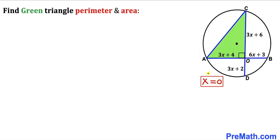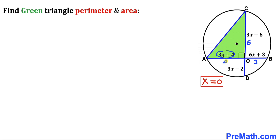Our next step is to substitute x = 0 into all the expressions. When x = 0, segment OB turns out to be 6, segment AO turns out to be 4, segment CO turns out to be 6, and segment OD turns out to be 2. Wait — substituting x = 0: AO = 3(0)+4 = 4, OB = 6(0)+3 = 3... Actually the side lengths of triangle AOC are AO = 4 and OC = 6.